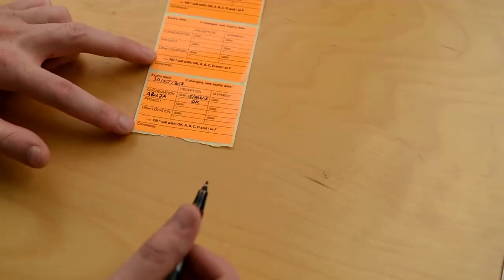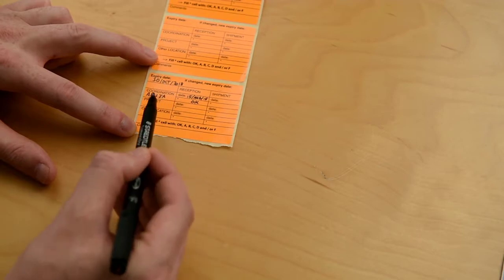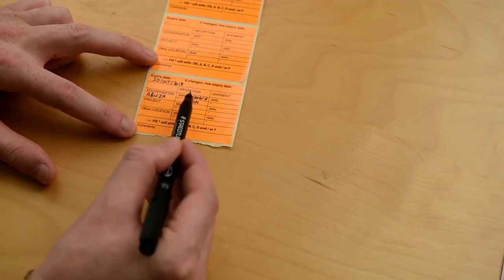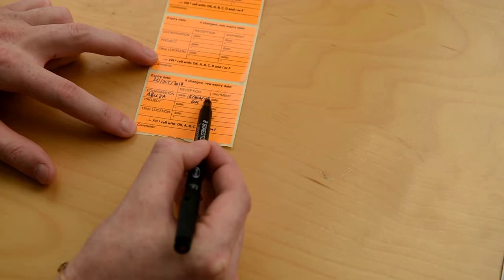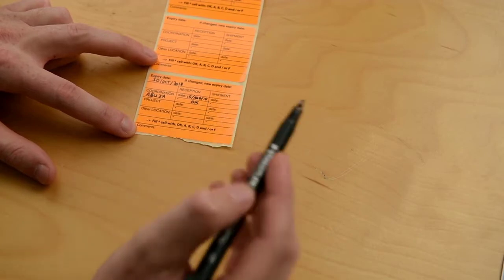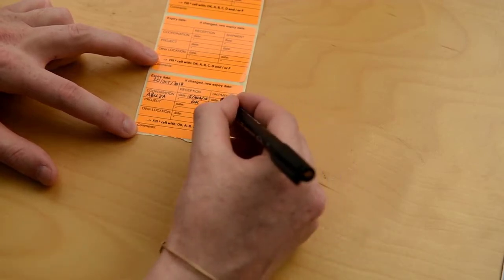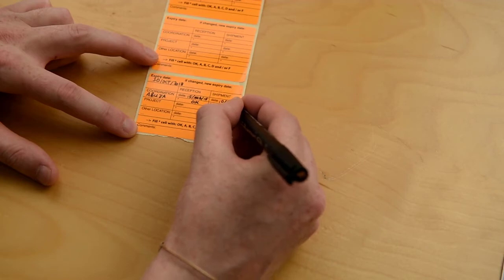We see the expiry date, coordination location, date of reception, and the status during reception. We copied these details from the original orange marking label attached to the rabies vaccine in the fridge.